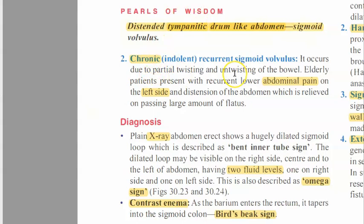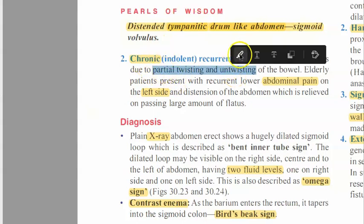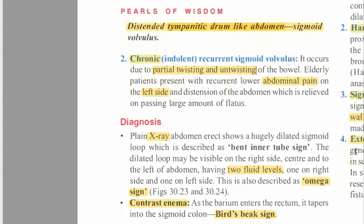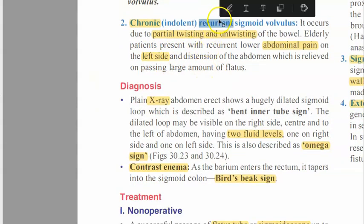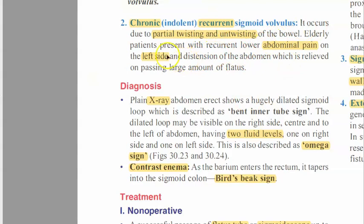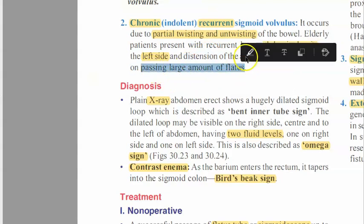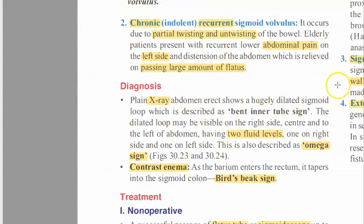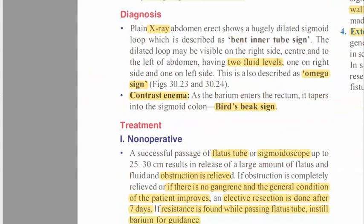Chronic sigmoid volvulus is different. These people are partially twisting and untwisting repeatedly - it is a recurrent sigmoid volvulus. They will present with lower abdominal pain on the left side, which is where the sigmoid colon is located. There will be distension of the abdomen that is relieved by passing a large amount of flatus. Twist, untwist, twist again.